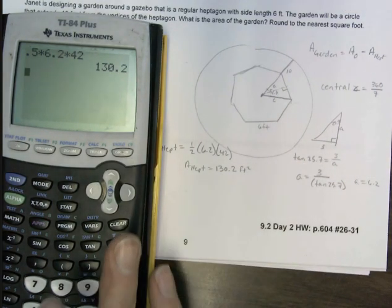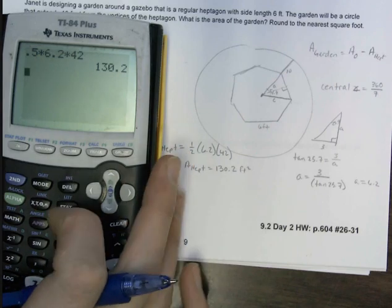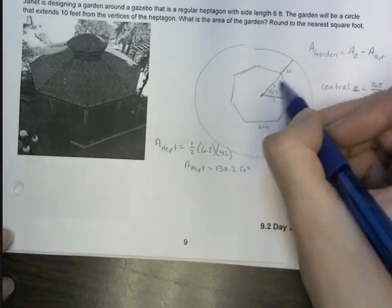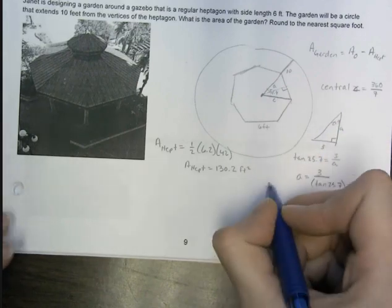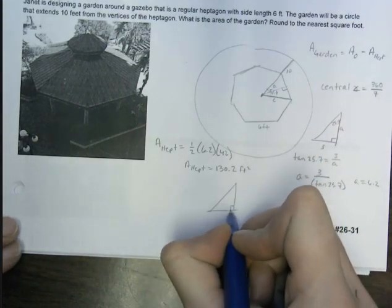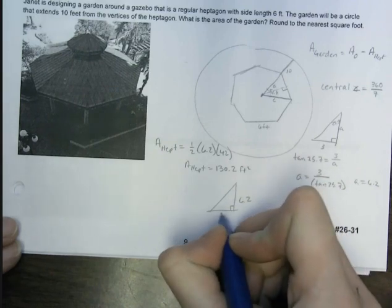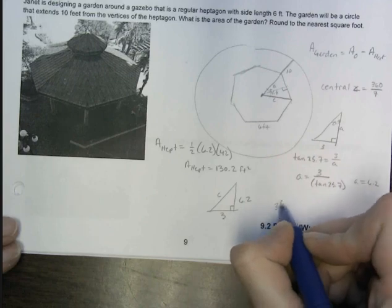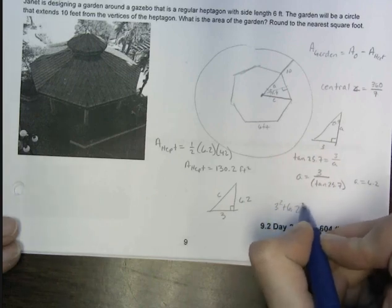So now we're going to do the circle. So remember, we needed the radius. So right now, I just have this 10. I need this whole thing. So back to this right triangle. So I've got the right triangle. I now know that this is 6.2. I knew this was 3, and I'm looking for c. So we're going to do a squared plus b squared equals c squared.